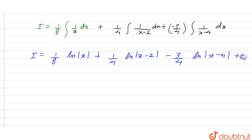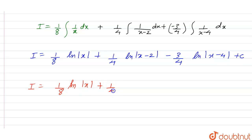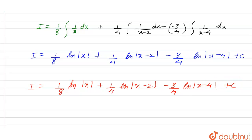So the final answer is I equals 1/8 ln|x| plus 1/4 ln|x minus 2| minus 3/4 ln|x minus 4| plus C.